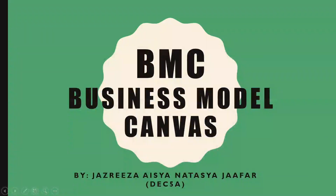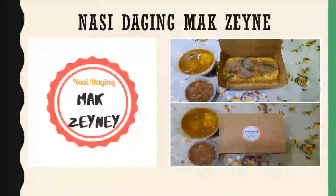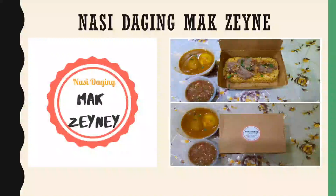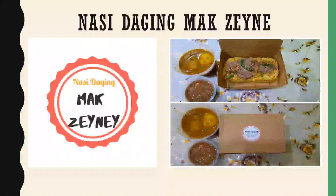The product that I choose to sell is nasi daging. Nasi daging is not really well known in KL, so this is my opportunity to introduce people to it. I named it Nasi Daging Mak Zaini — Mak Zaini is actually my mom's name, Zaini. One of the reasons I chose that name is because this is her own recipe, and I want everyone to know that it is my mom's recipe.